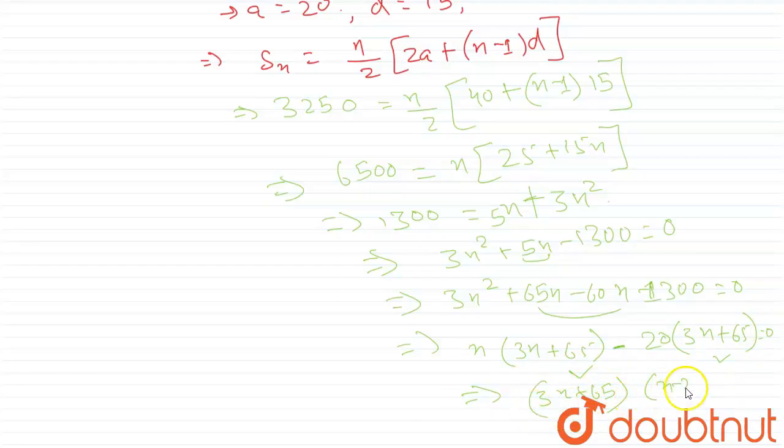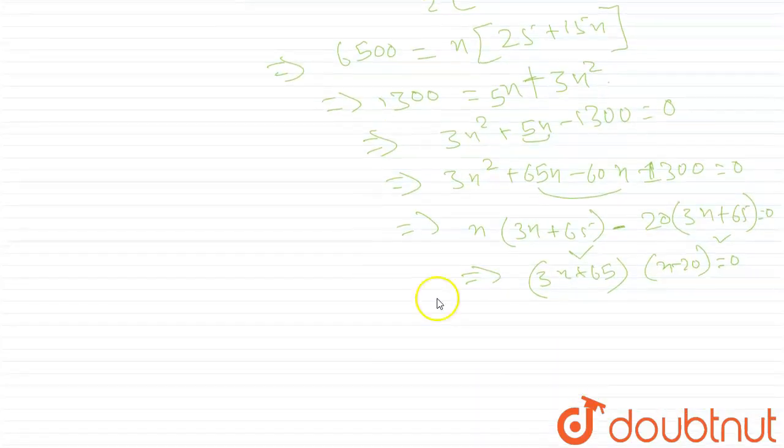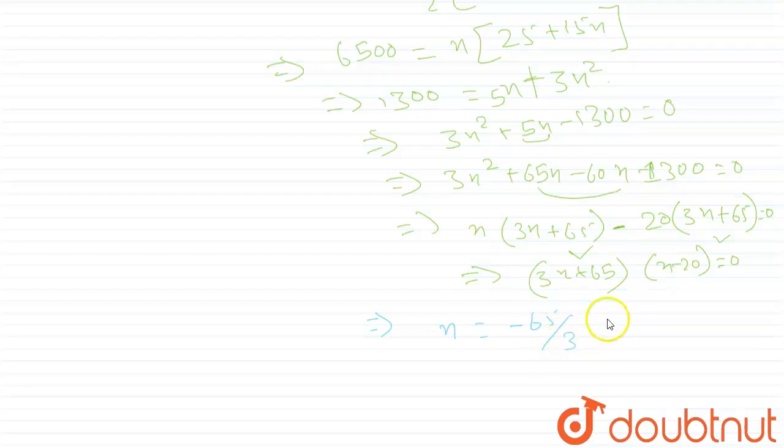Now let's solve both the equations independently. So it will become n equal to minus 65 by 3, and this will be n equal to 20.